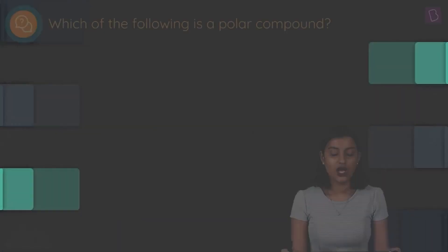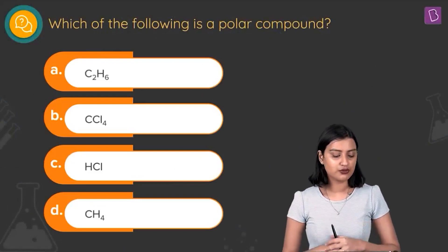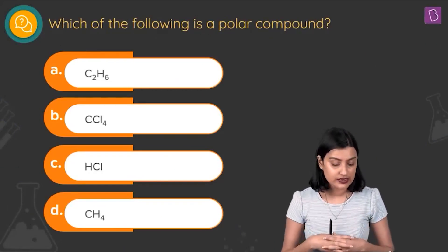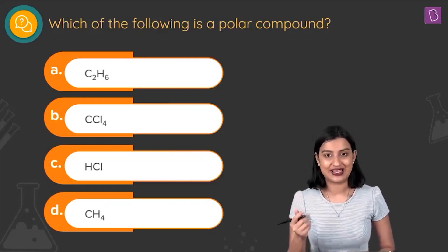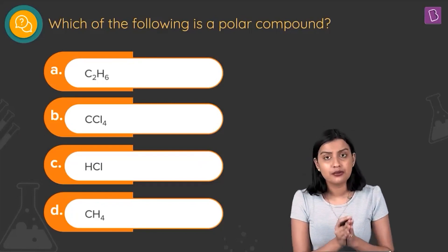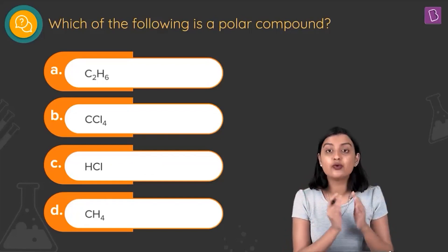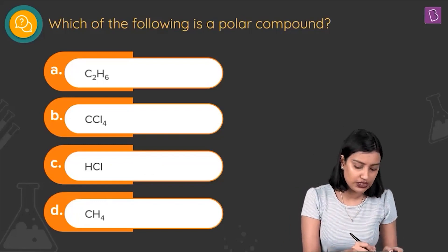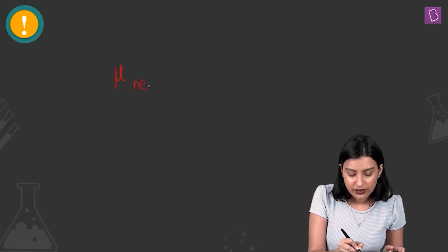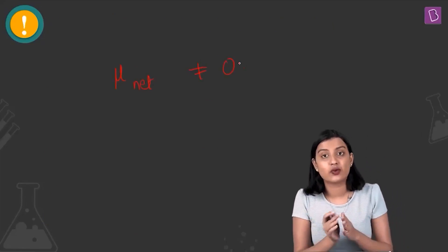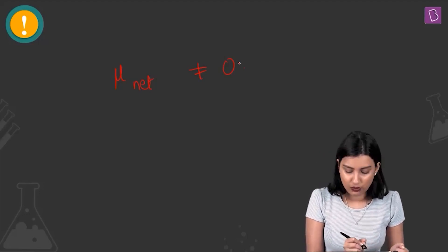The next question asks: which of the following is a polar compound? The options are C2H6 (ethane), CCl4 (carbon tetrachloride), HCl (hydrogen chloride), and CH4 (methane). We need to determine which is polar. The condition is: if the net dipole moment μ_net ≠ 0, then the molecule is polar.